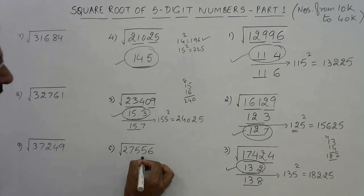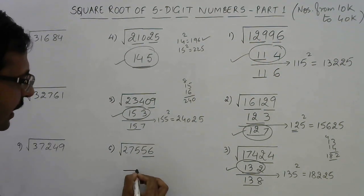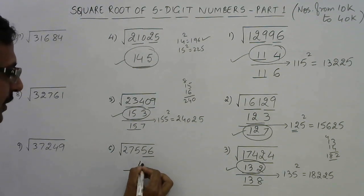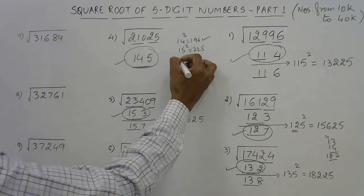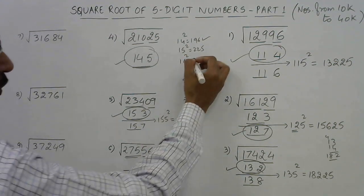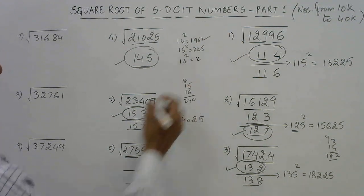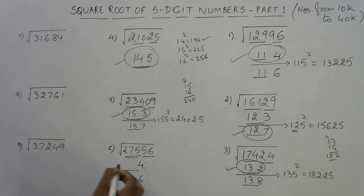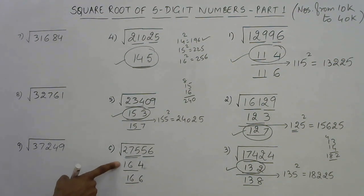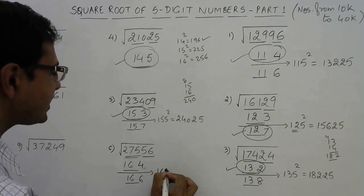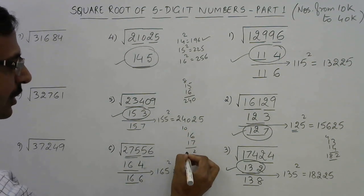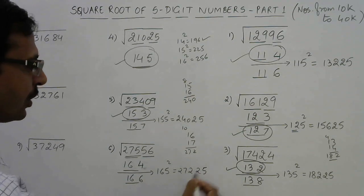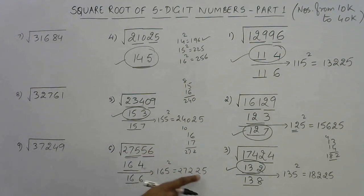Let's see a number ending with 6. Just like before, our answer will either end with 4 or end with 6. The triplet is 275. 16 squared is 256 and 17 squared is 289, which is above 275, so 16 is the remaining part. The answer is either 164 or 166. Take the intermediate number 165 squared. 16 multiplied by its successor 17: 16 times 17 is 272, followed by 25, giving 27225. The original number is greater than 27225, so our answer is the greater one — 166.